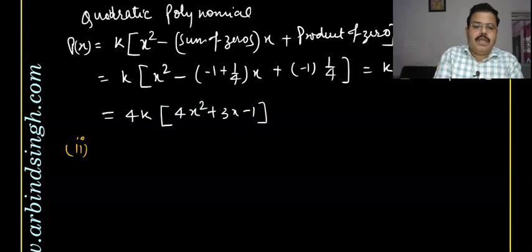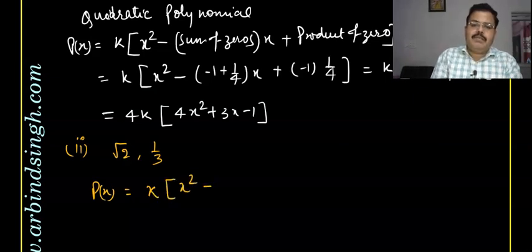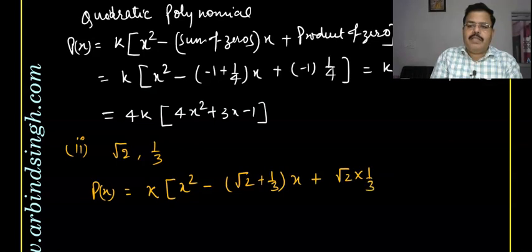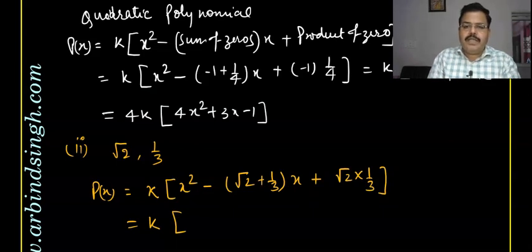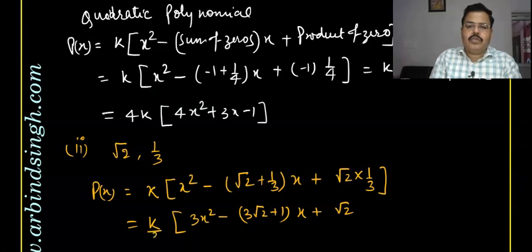Similarly, for the second question, the zeros are √2 and 1/3. The polynomial is k times of x² minus (√2 + 1/3)x plus (√2 × 1/3). That simplifies to k times of (3x² - (3√2 + 1)x + √2) divided by 3, and the 3 can come outside. So the polynomial for the second question is like this.